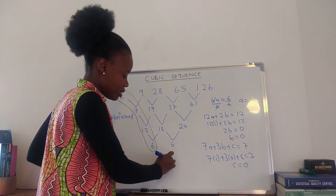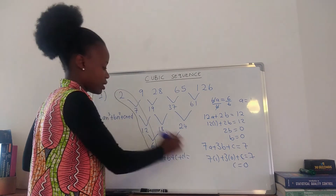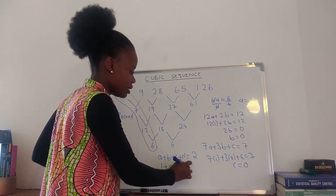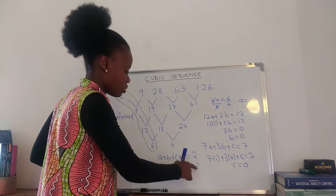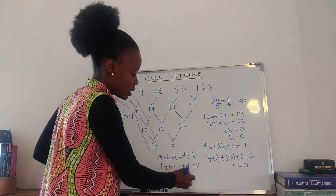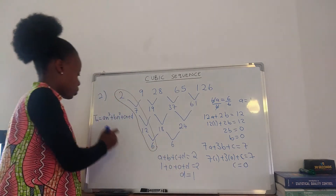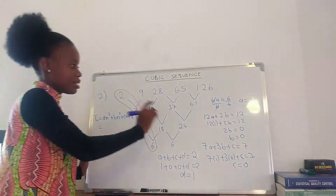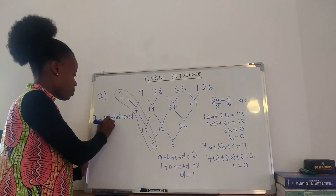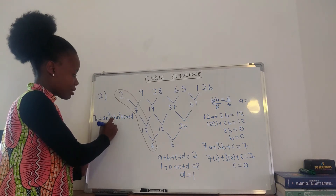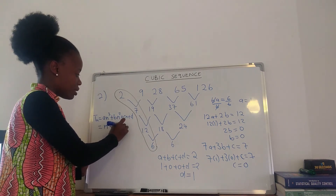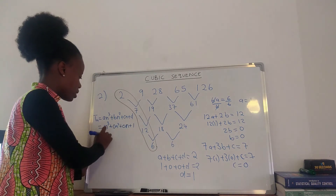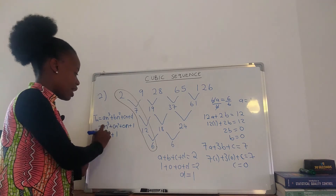To find d: a + b + c + d = the first term, which is 2. Substituting: 1 + 0 + 0 + d = 2, so d = 1. The nth-term expression is T(n) = n³ + 0n² + 0n + 1, which simplifies to n³ + 1.